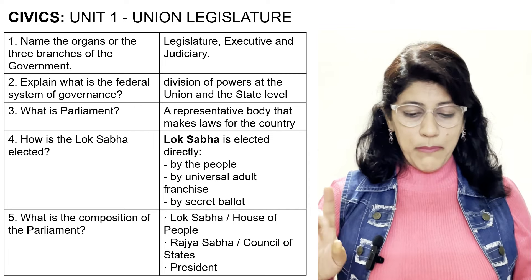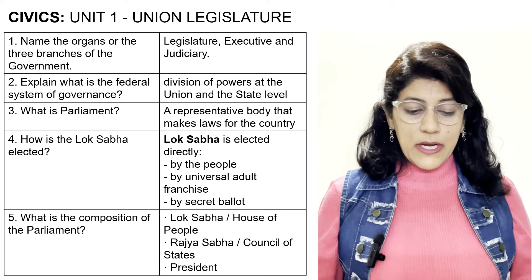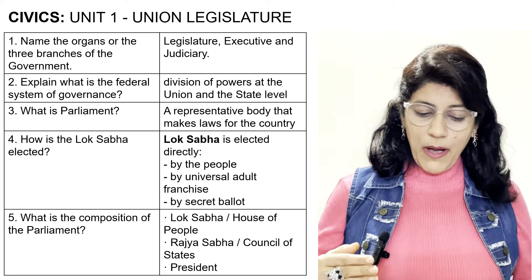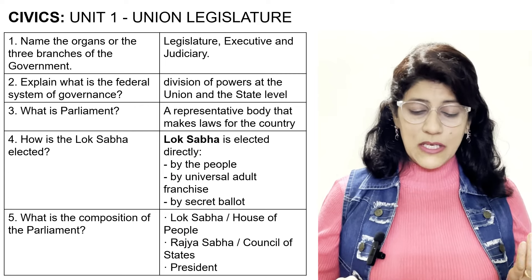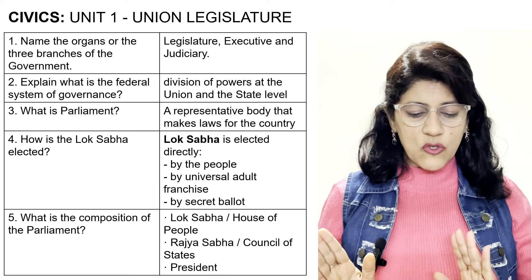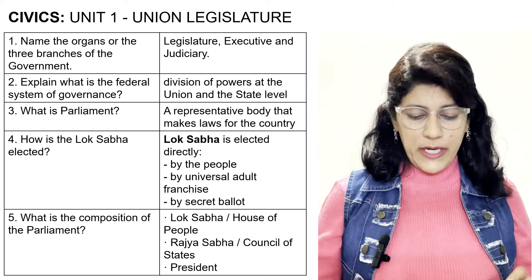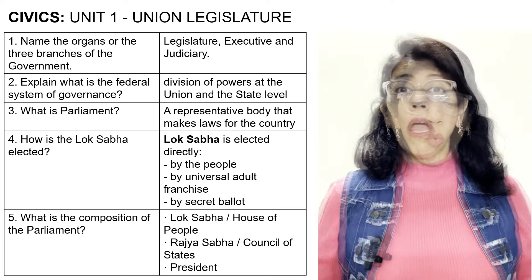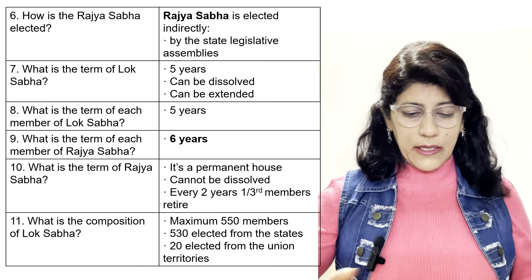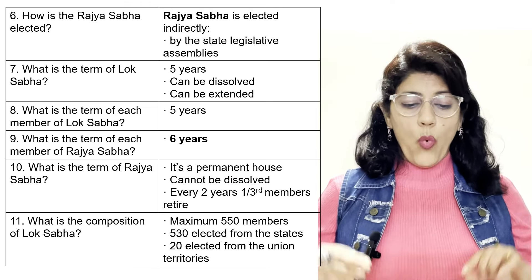What is the composition of the Parliament? Lok Sabha or House of People, Rajya Sabha or Council of State, and the President. Lok Sabha is the same as House of People, or the lower house. Rajya Sabha means Council of State. How is the Rajya Sabha elected? Rajya Sabha is elected indirectly by the state legislative assemblies.